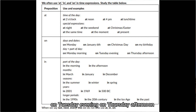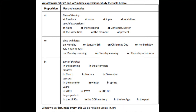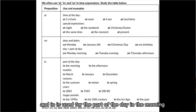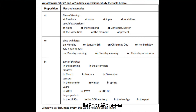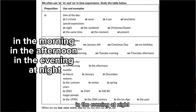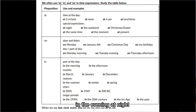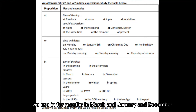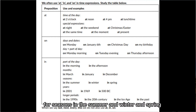We use 'in' for parts of the day: in the morning, in the afternoon, in the evening — but remember, we say 'at night.' We also use 'in' for months: in March, in January, in December; and for seasons: in the summer, in winter, in spring.